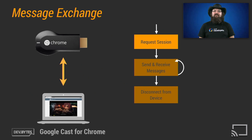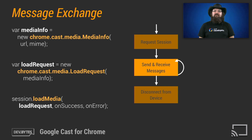With a connection established, the sender application may now communicate with the connected Cast receiver application. Messages are exchanged between the sender and receiver using namespaces, also called protocols. These messages are used to invoke behaviors on the receiver application and to update the sender application as to the state of the receiver app. One example of message exchange would be to load some media onto the Cast receiver. The Cast APIs come bundled with a media API that enables a sender app to tell the receiver to load and playback media, such as video. The media info object gets created that bundles the information about the media. This object is then used to create a load request object that gets passed to a session function called load media. The load media function serializes the data and communicates with the receiver application over the media namespace. Sender and receiver applications must agree on the supported namespaces in order to communicate with each other.